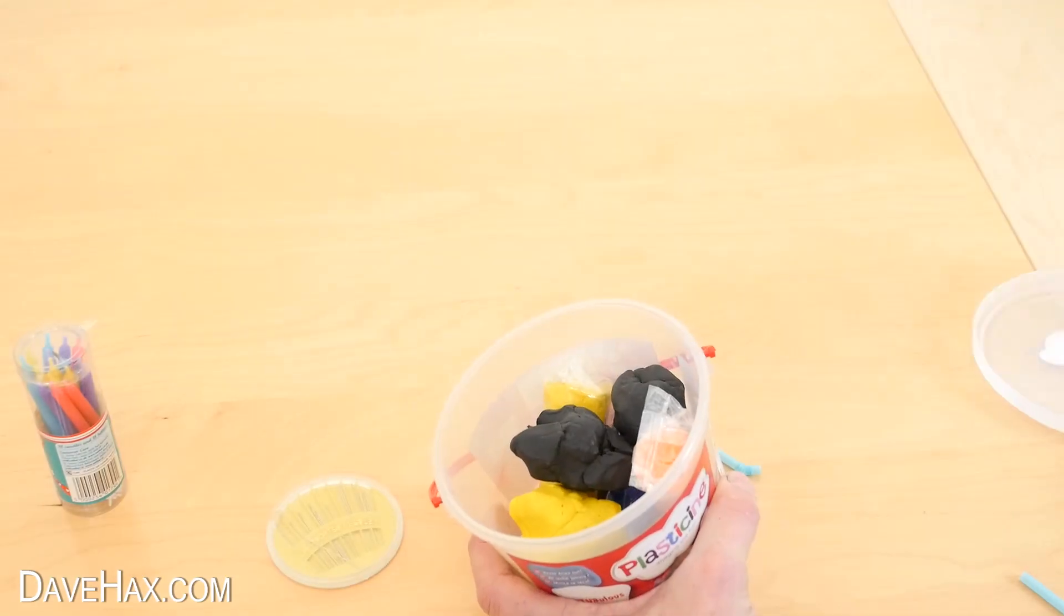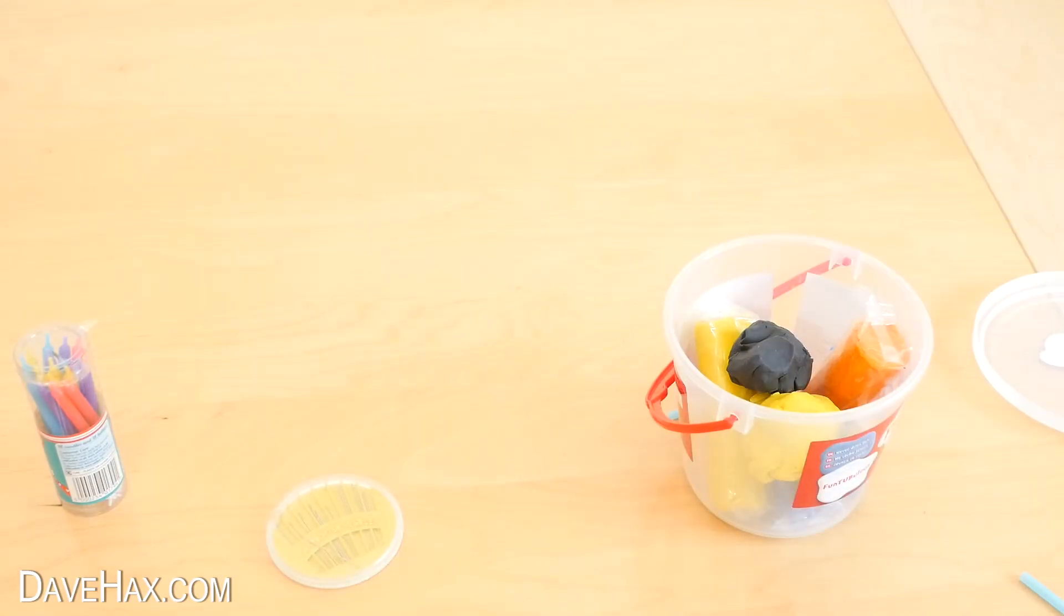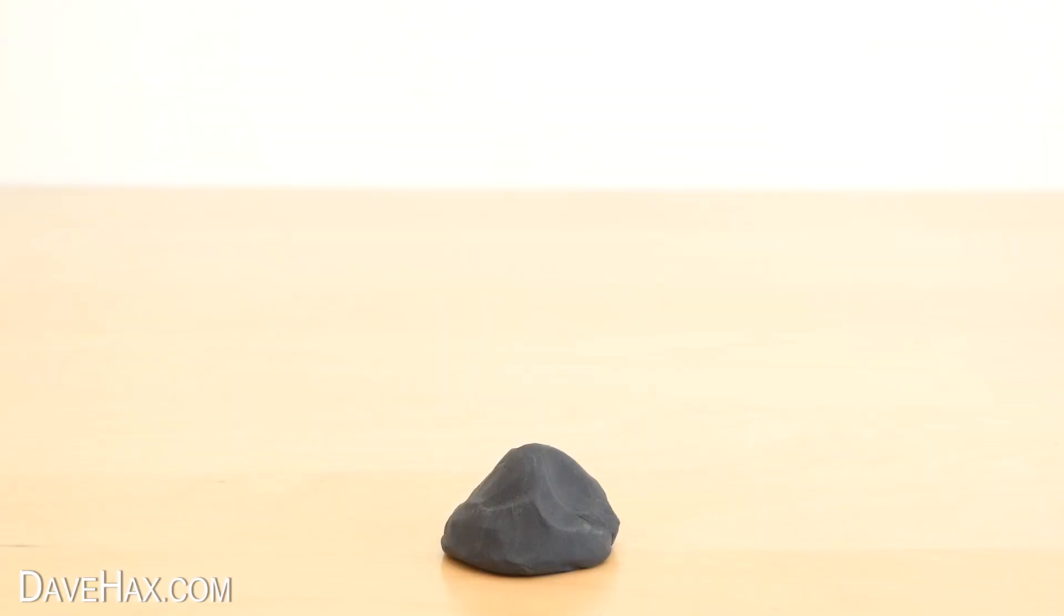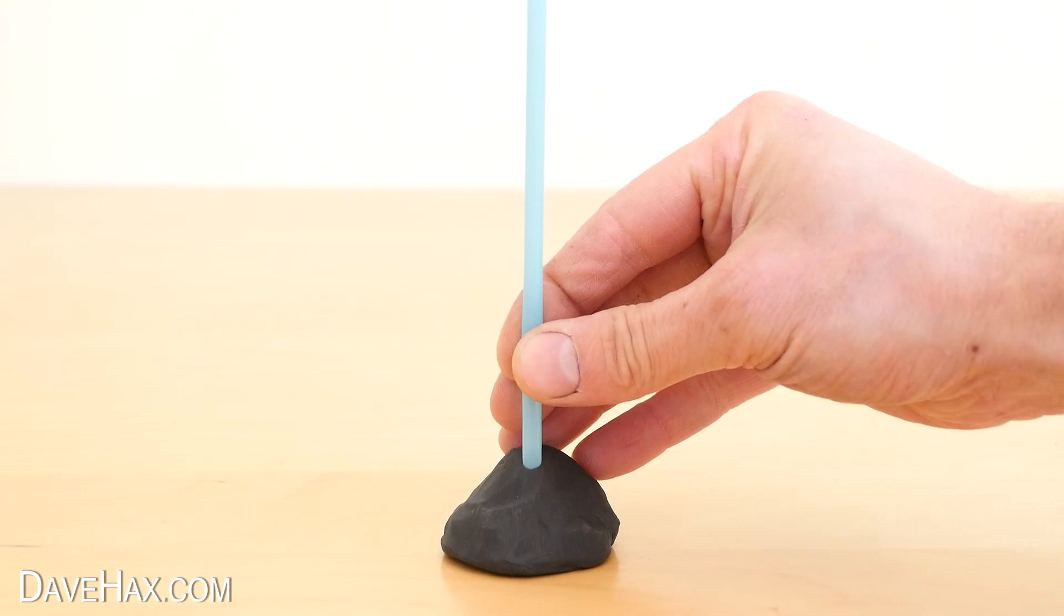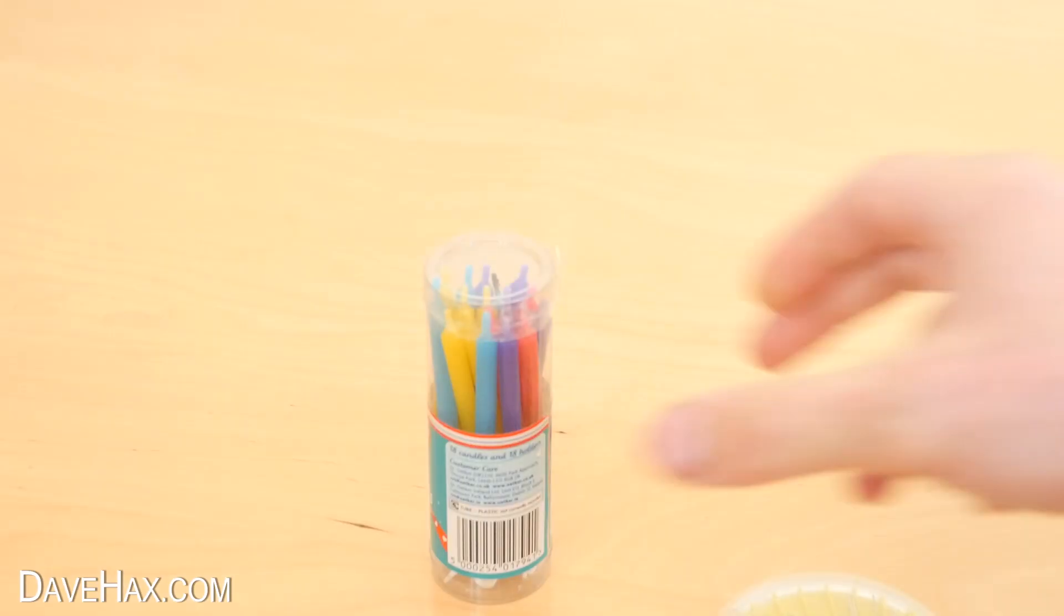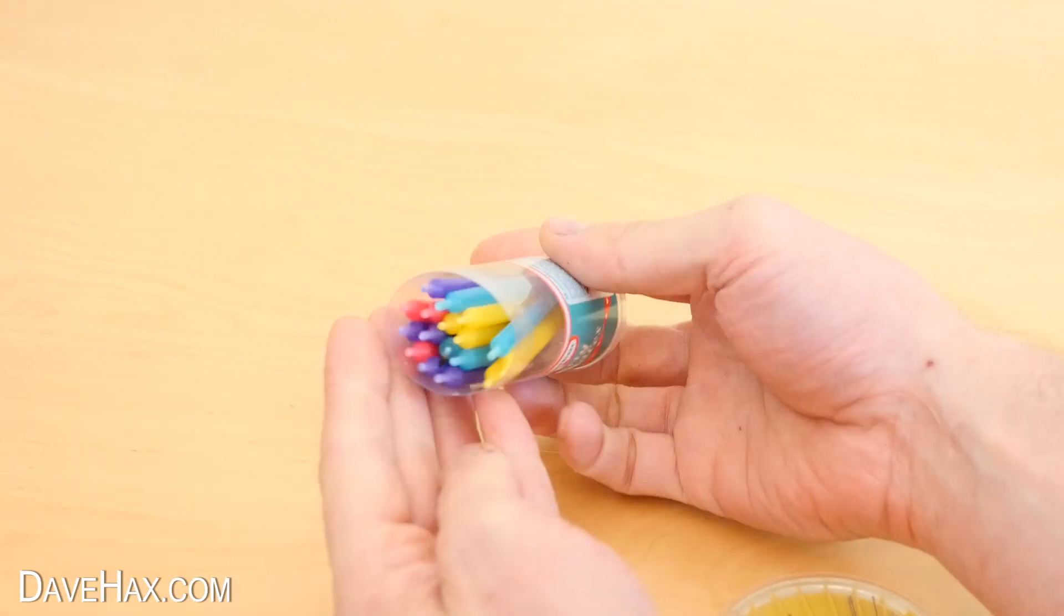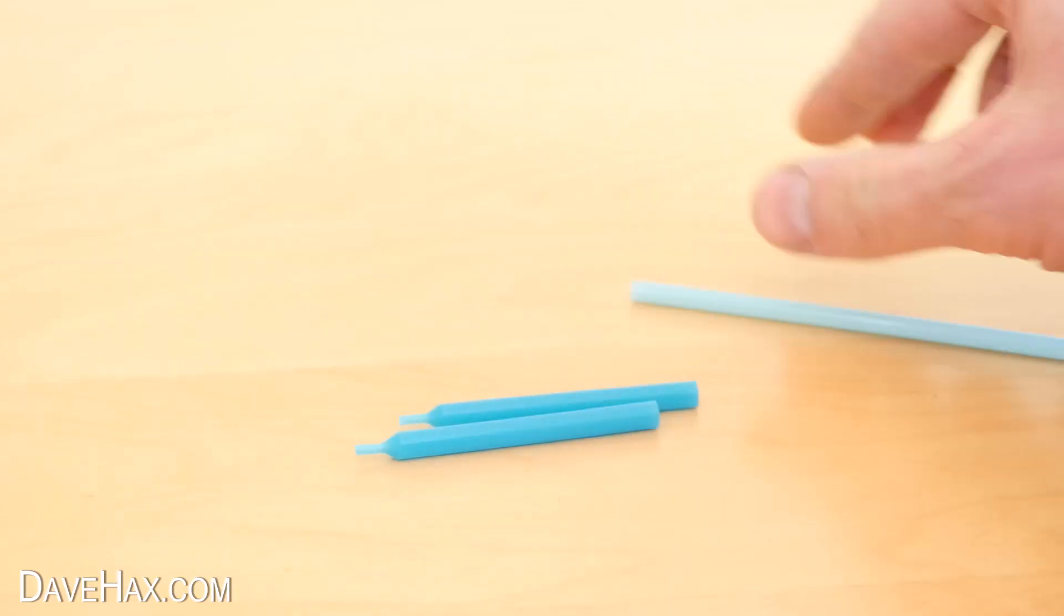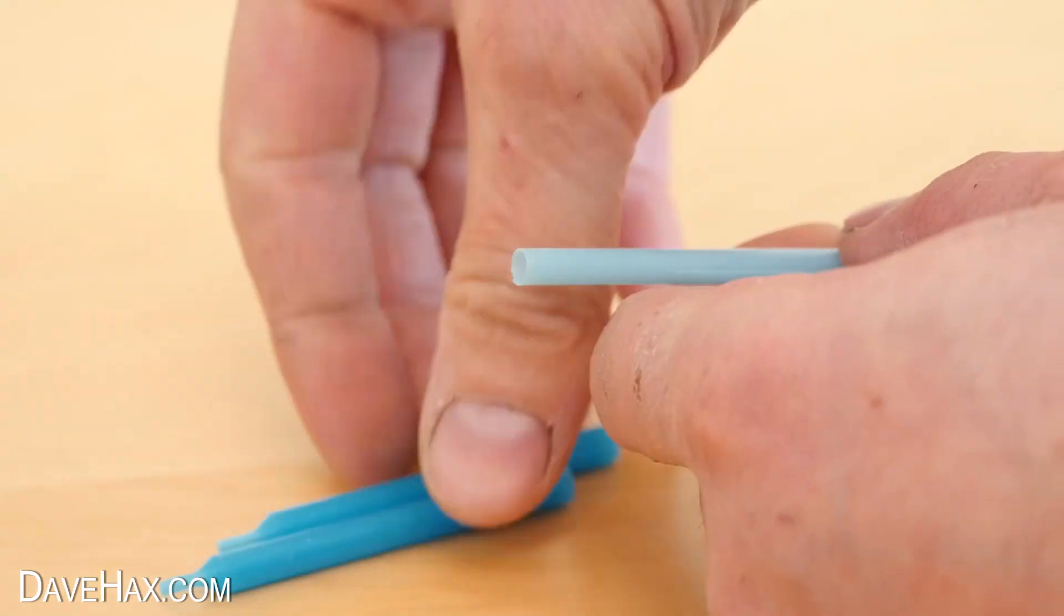Next I took a bit of plasticine, pushed it onto the table, and used it to hold one of the straws upright like this. Then I took a couple of small birthday cake candles.